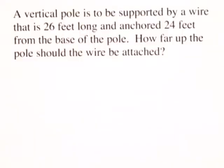A vertical pole is to be supported by a wire that is 26 feet long and anchored 24 feet from the base of the pole. How far up the pole should the wire be attached?